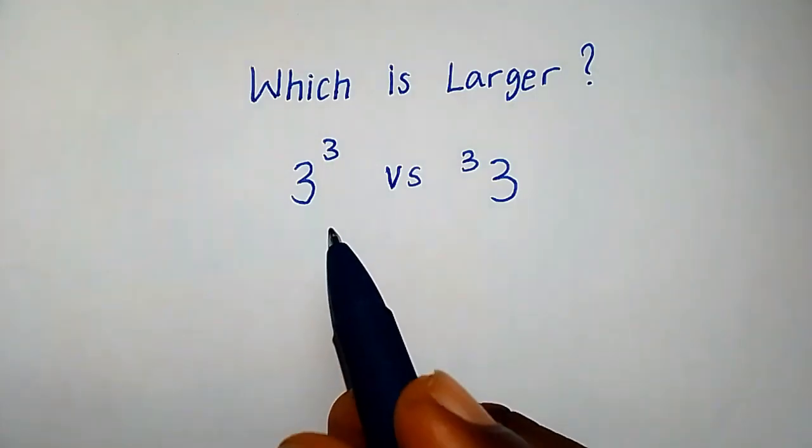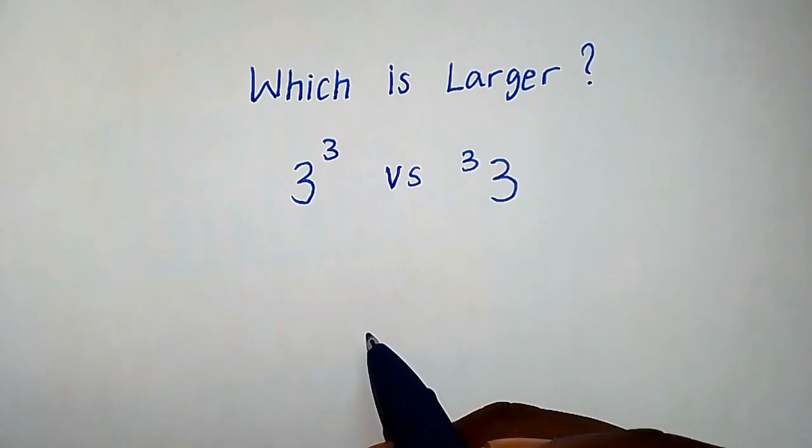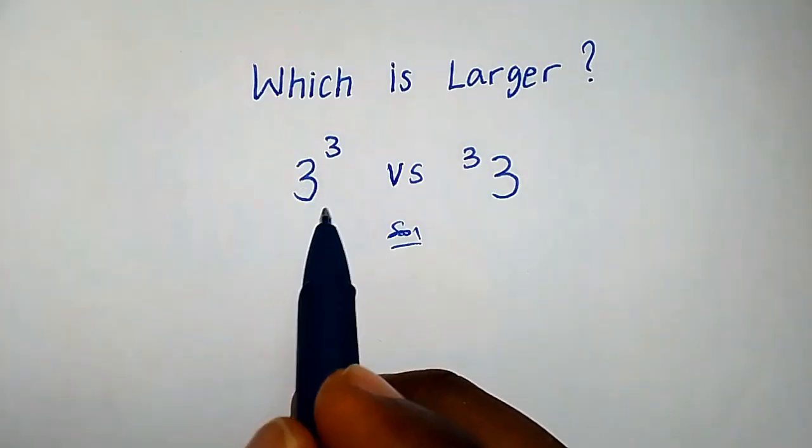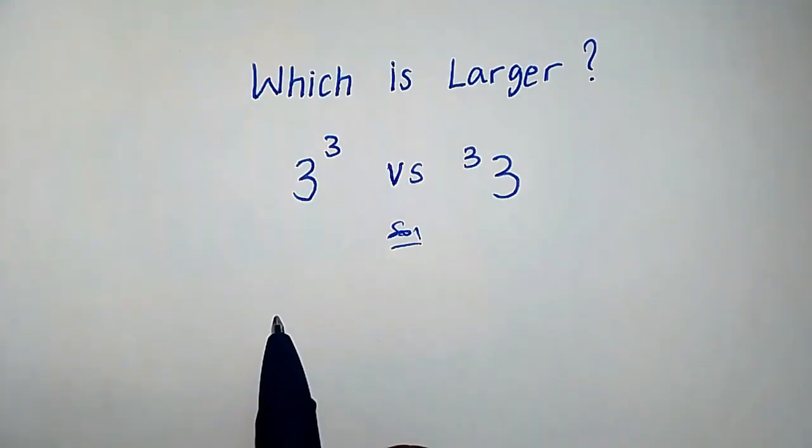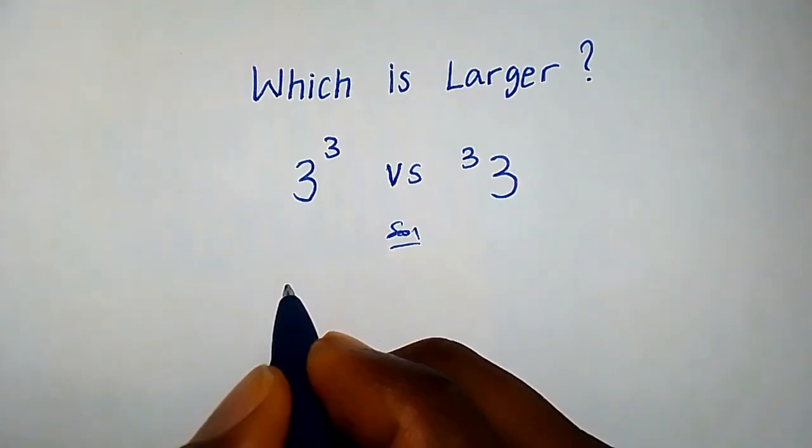Which is larger: 3 to the power of 3 versus 3 to the super power of 3? Solution: this kind of expression is called exponentiation, while this kind of expression is called tetration.